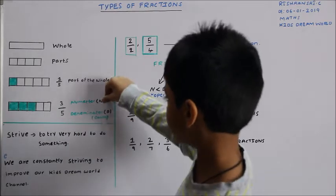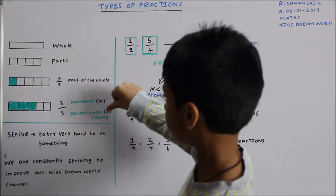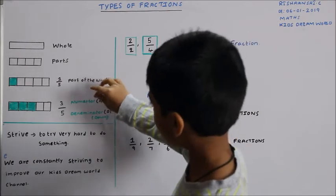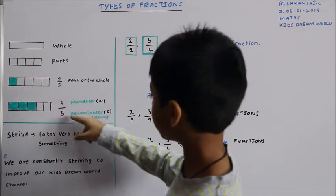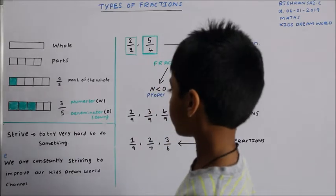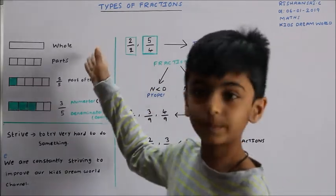This is 3/5. This is the numerator and this is the denominator. The upper one is called the numerator, and this is the denominator. So this was the proper fraction.